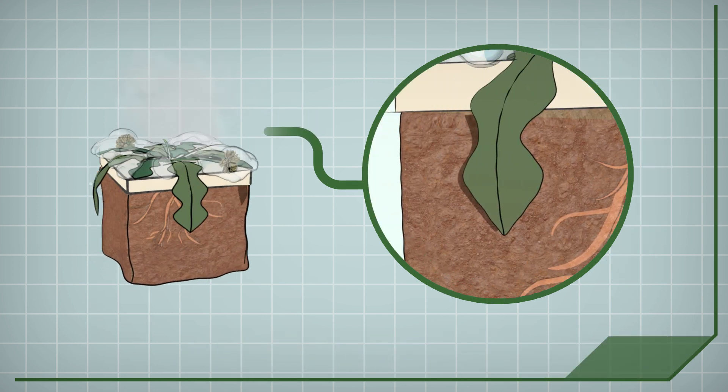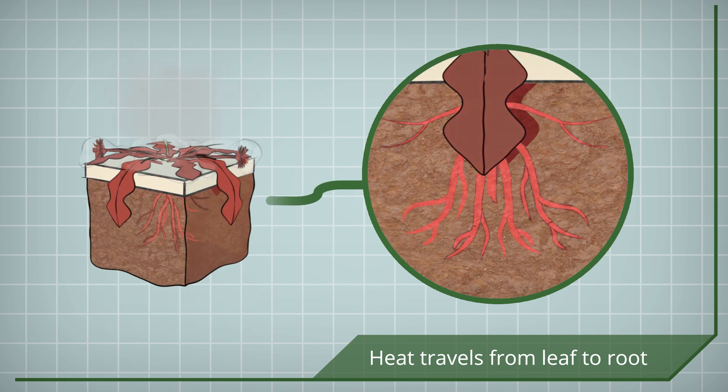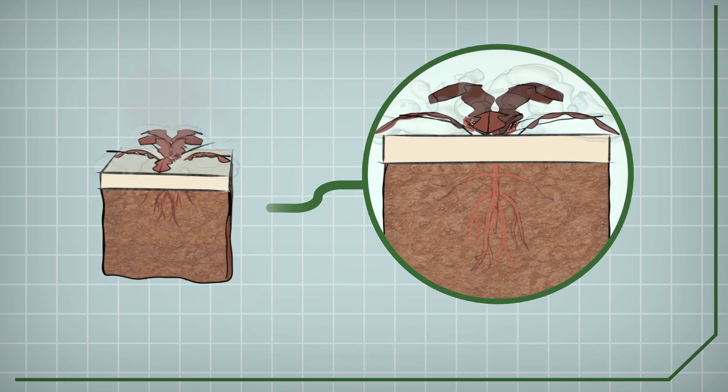The heat penetrates the plant's waxy outer leaf layer, travels down the stem and into the root structure, cooking the plant, causing it to die or to be severely damaged.